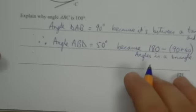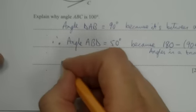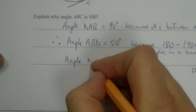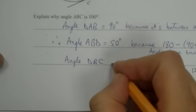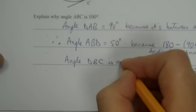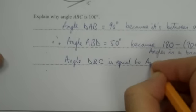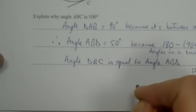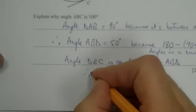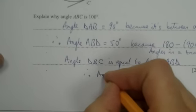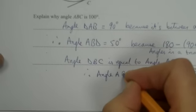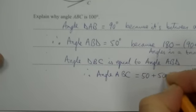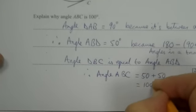And then I'm going to say angle DBC is equal to angle ABD. Therefore, angle ABC equals 50 plus 50, which equals 100 degrees.